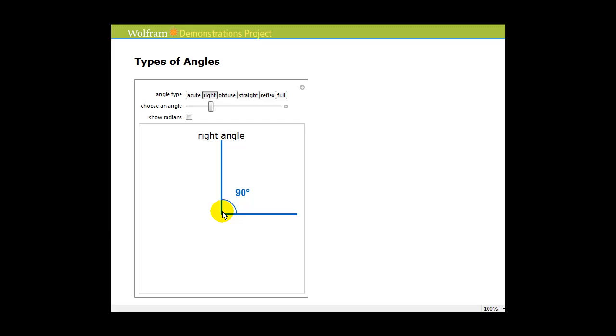An angle that equals exactly ninety degrees is a right angle. And then any angle between ninety and one eighty is called an obtuse angle. Until we reach an angle of exactly one hundred eighty degrees, which is a straight angle. Then any angle between one hundred eighty degrees and three hundred sixty degrees is called a reflex angle.